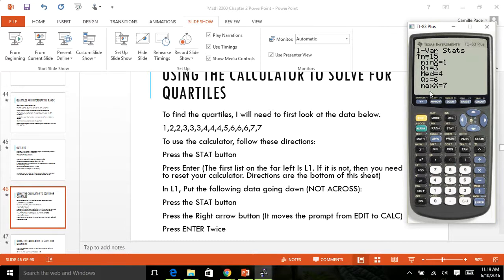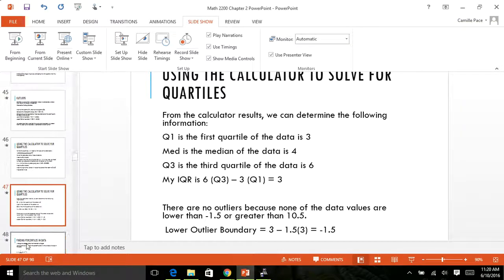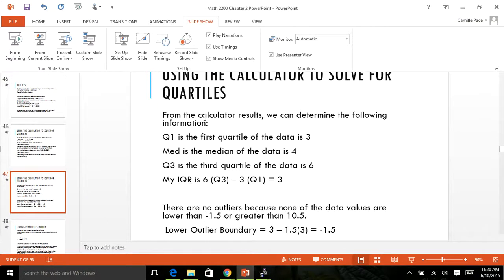I need Q1 and Q3. So Q1 is three, Q3 is six. Okay, so then since I've gotten that, now I need to determine my outliers.